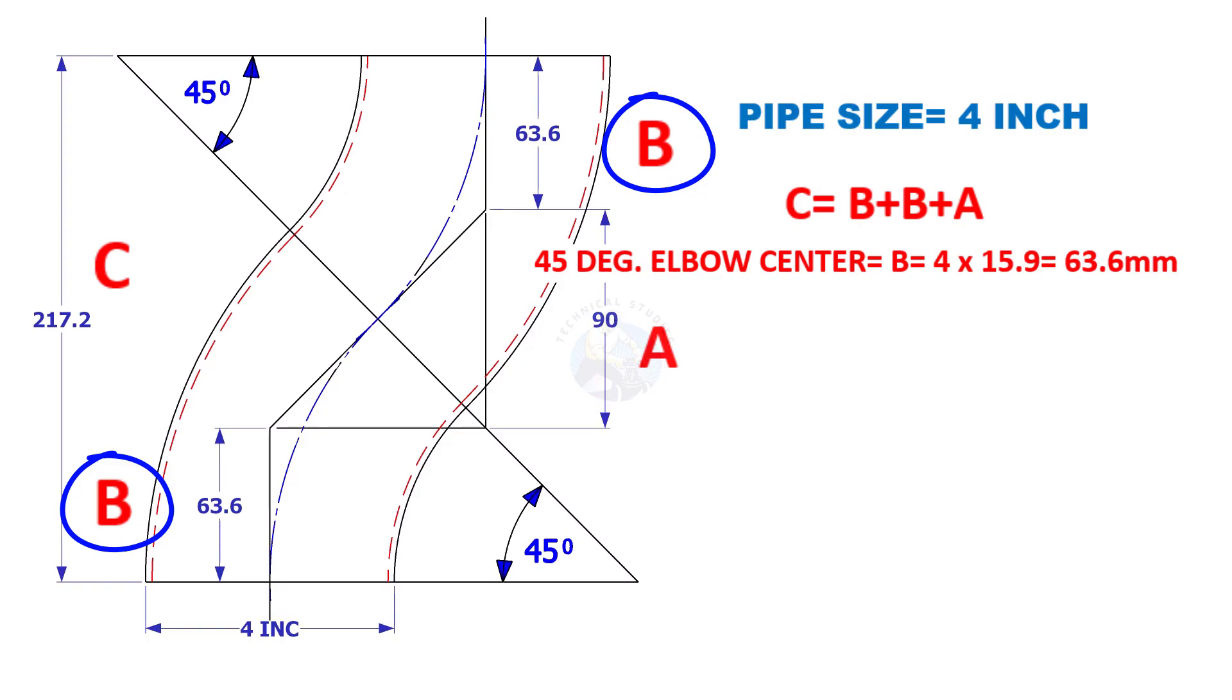Elbow center b is four inch multiplied by 15.9. 15.9 is constant. So the value of b equals 63.6 millimeters.